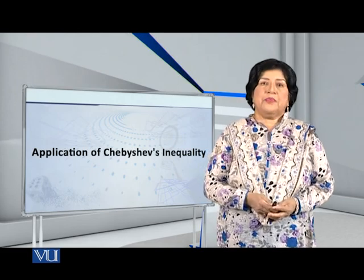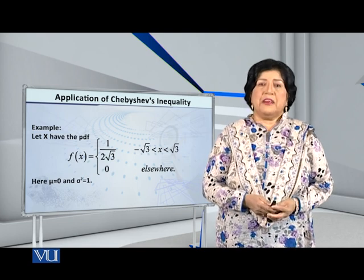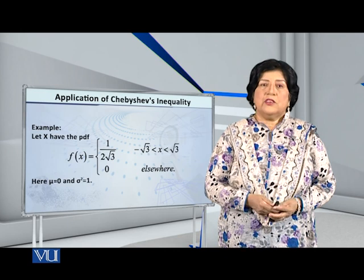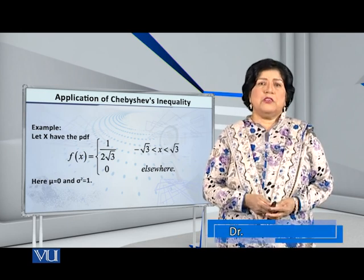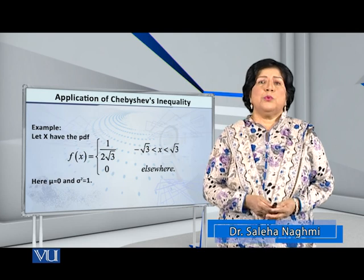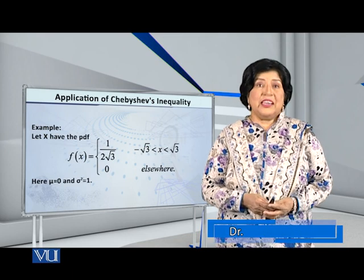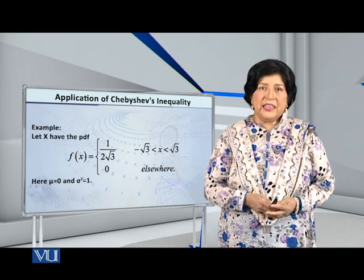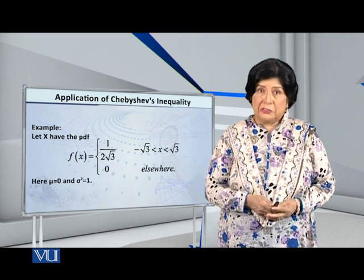Dear students, let me present to you an application of Chebyshev's inequality. Let the random variable X have the PDF: f(x) = 1 over 2 times square root of 3, where x lies between minus square root of 3 and plus square root of 3.